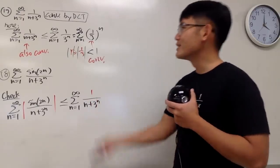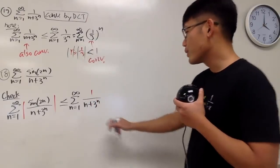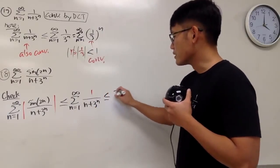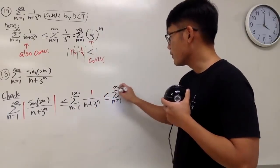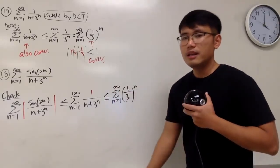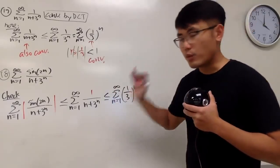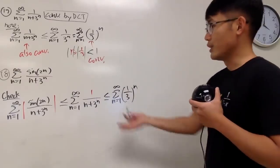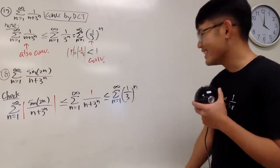And this becomes the question that we did earlier, but real quick, we can just say this right here is less than or equal to the sum as n goes from 1 to infinity, 1 over 3 to the nth power. Especially if you have to do this question itself, right? You cannot just say look back to question number 17.